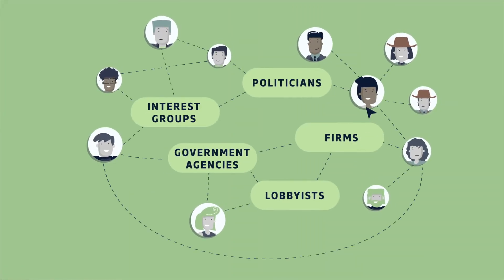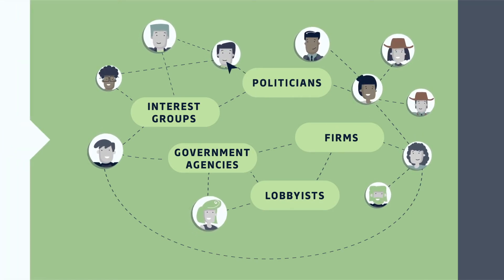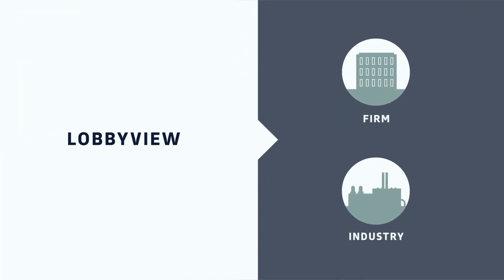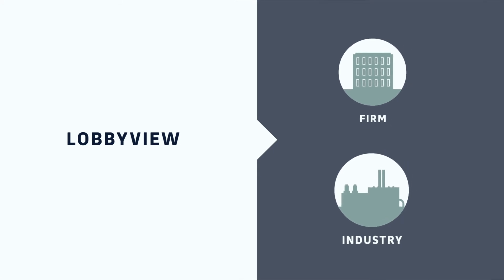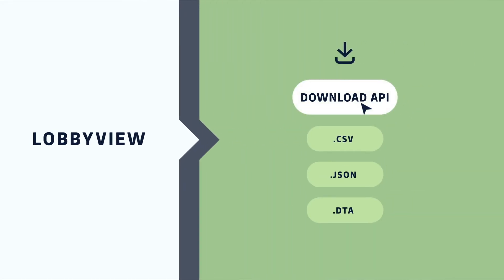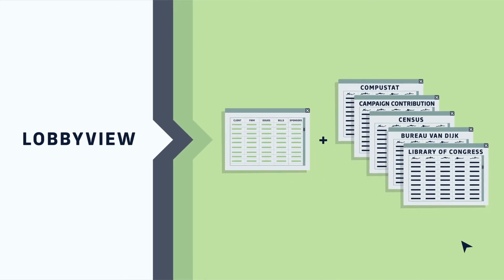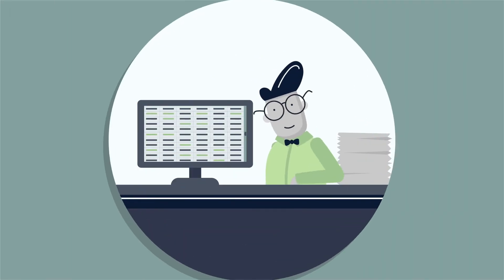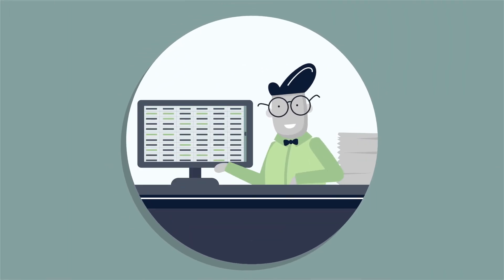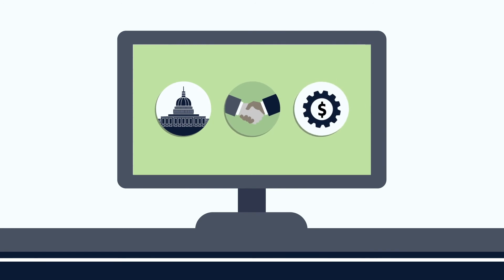LobbyView provides visibility into these political networks. And because the database includes standardized identifiers at firm and industry levels, and can be easily downloaded in common formats, researchers can merge the lobbying data with other databases. This makes it possible to further study political networks, as well as the political, social, and economic activities of interest groups.